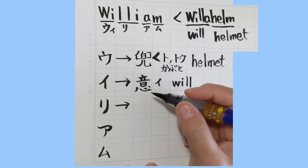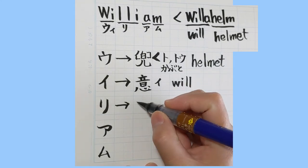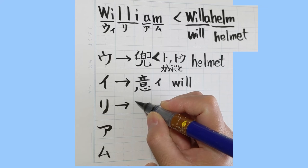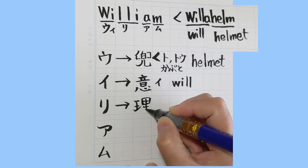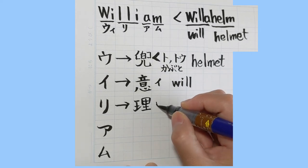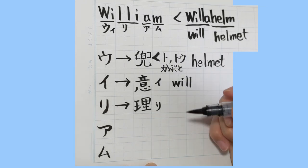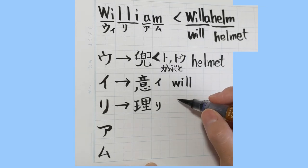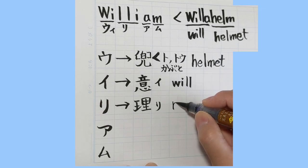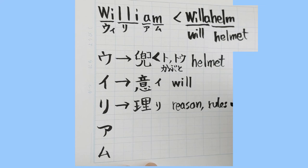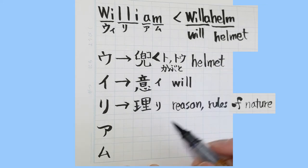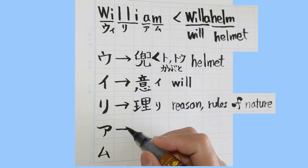And next, just these two kanji express William's original meaning. For the リ sound, I put this one. The pronunciation is リ, and this means reason — the rules of nature. The rules of nature is リ.